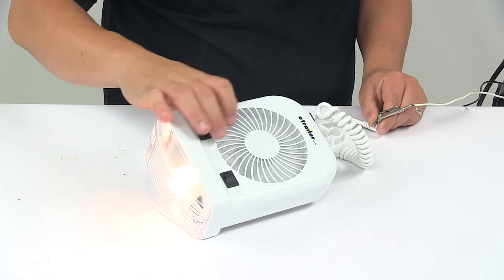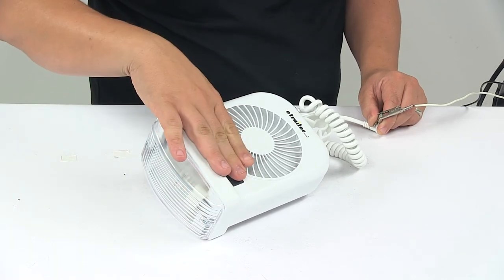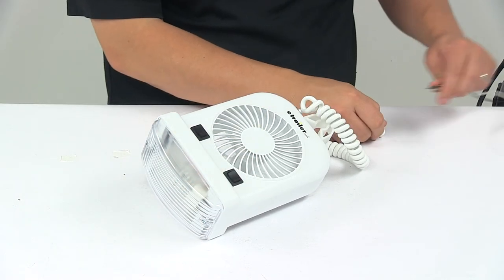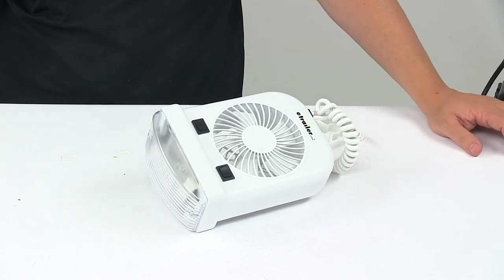And we can turn the light on at the same time. That's going to do it for today's look at the RV interior bunk light with the two-speed fan.